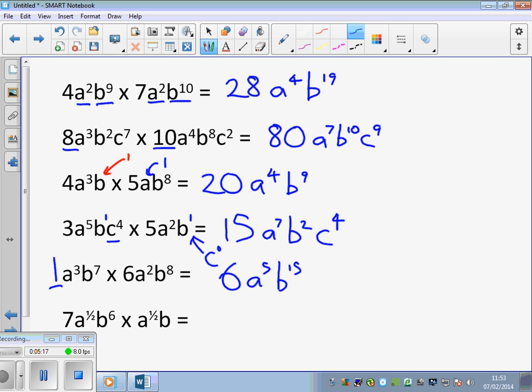Our last question on this page, a bit of a brain teaser. But we apply the same rules. A to the power of a half. B is missing its coefficient. The coefficient is, of course, 1. So we have 7 multiplied by 1. A to the power of a half multiplied by A to the power of a half. We apply our rules. We add indices. And a half plus a half is 1.